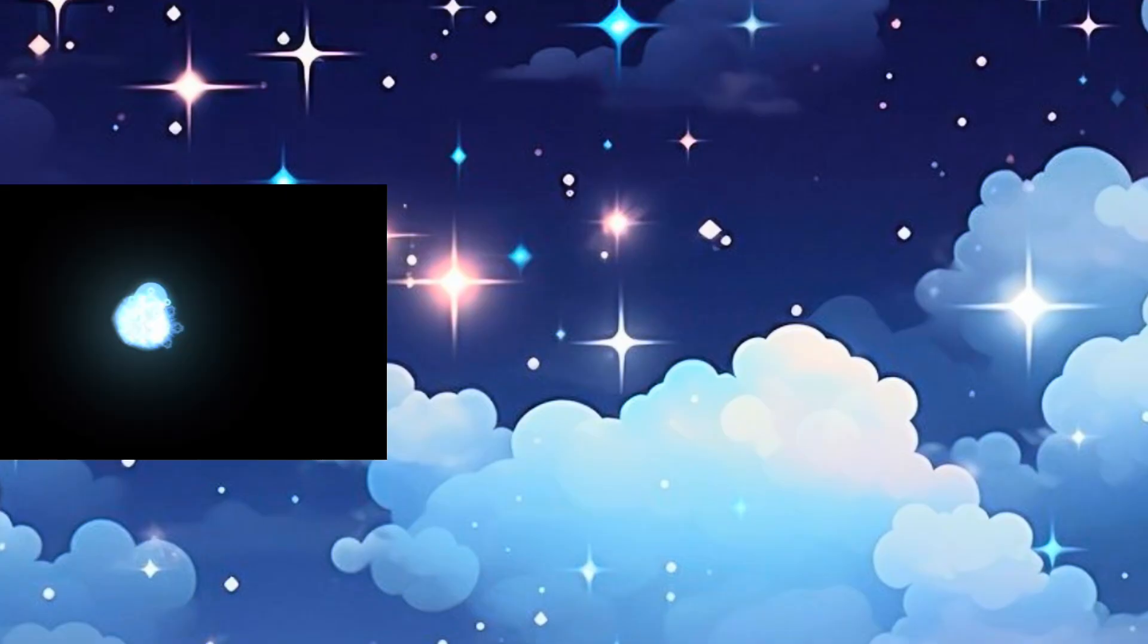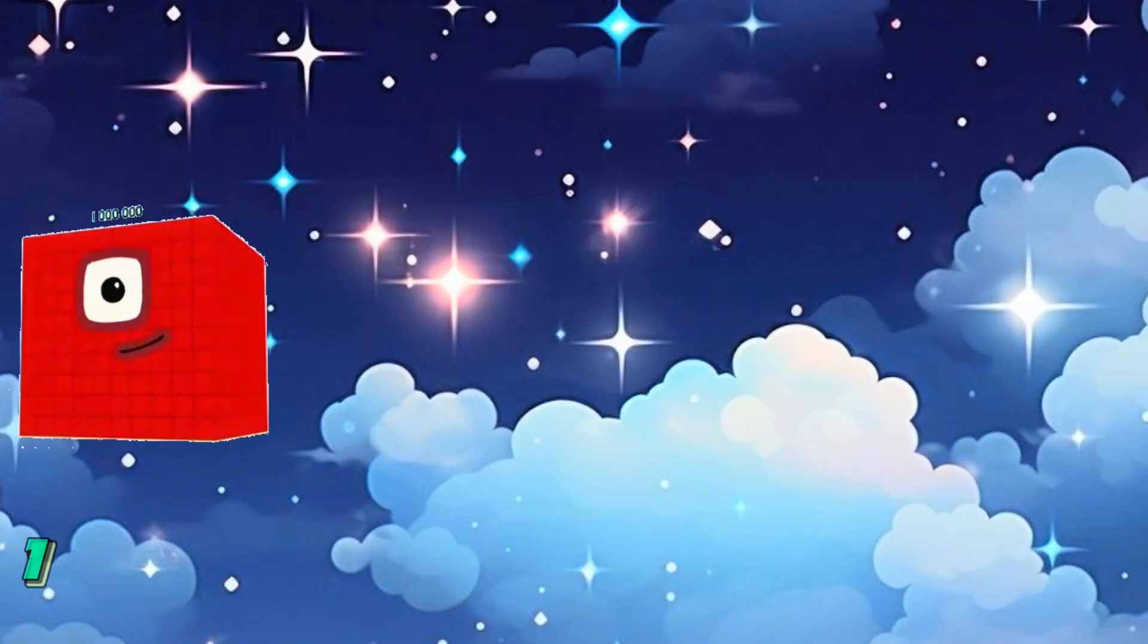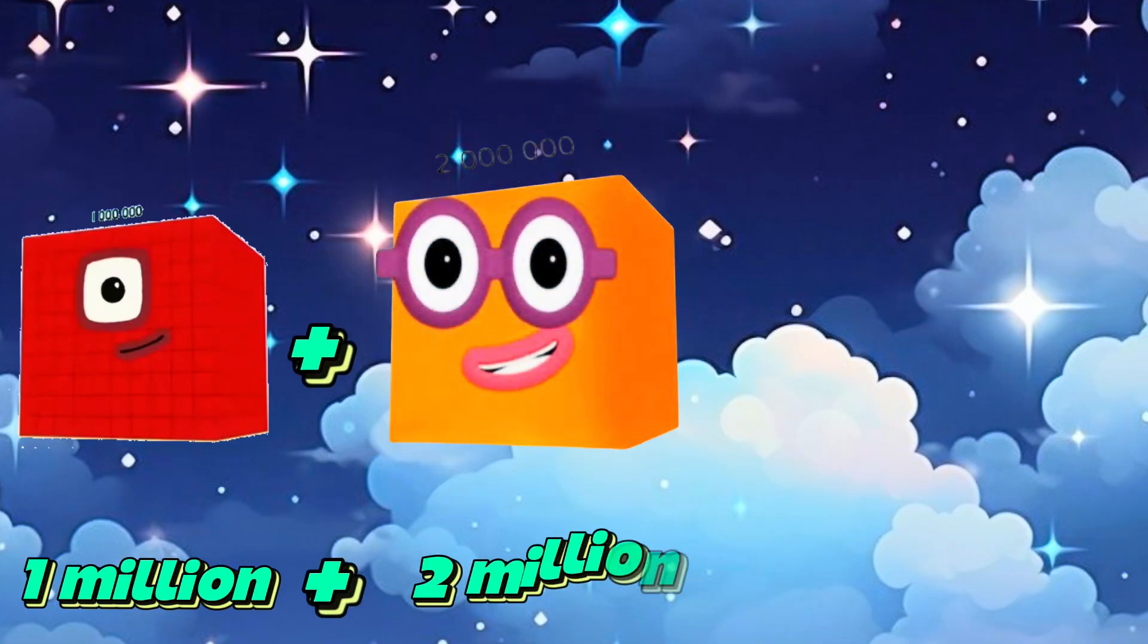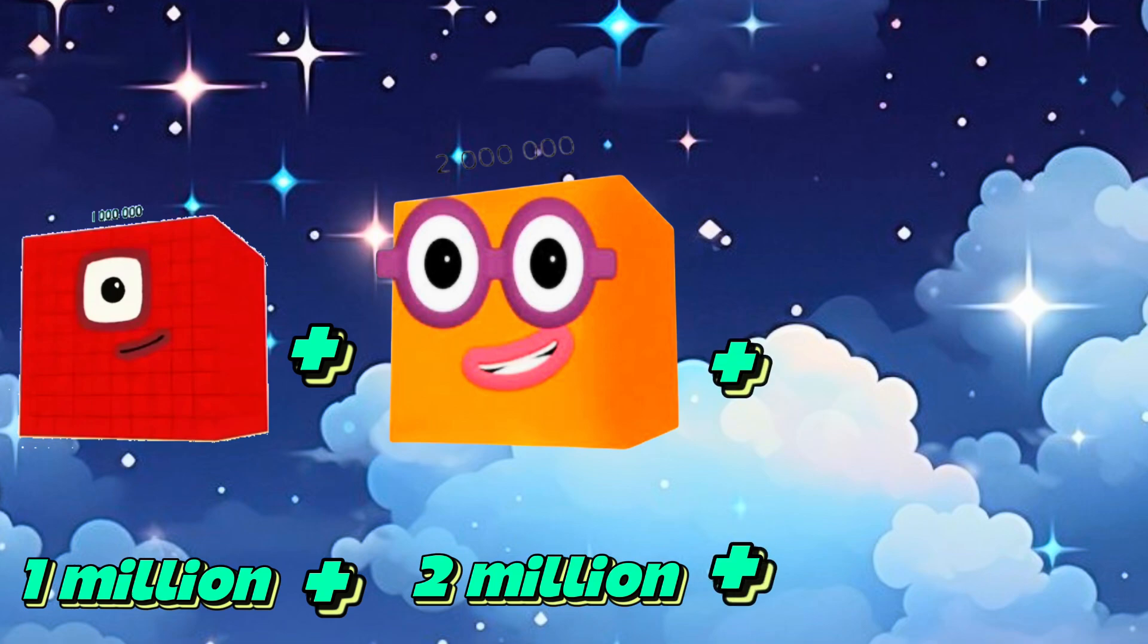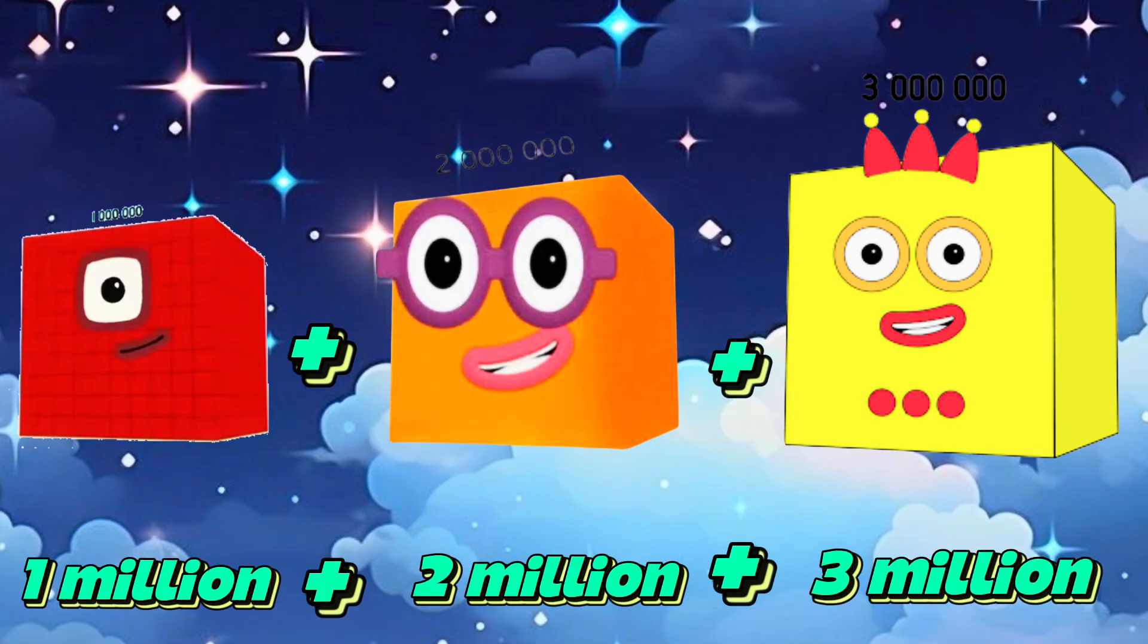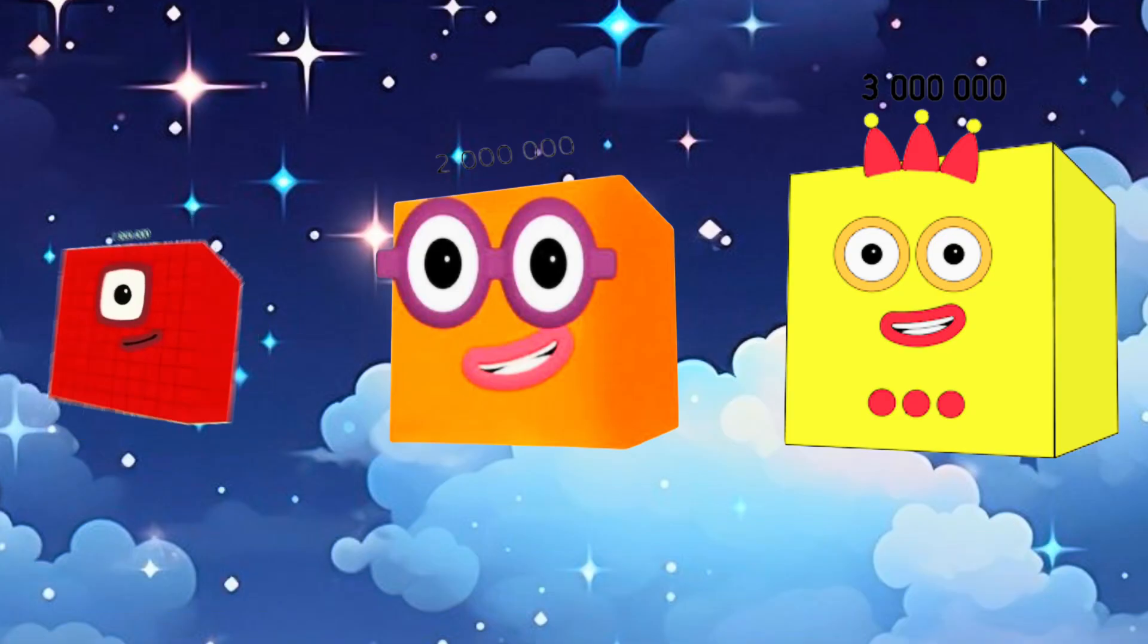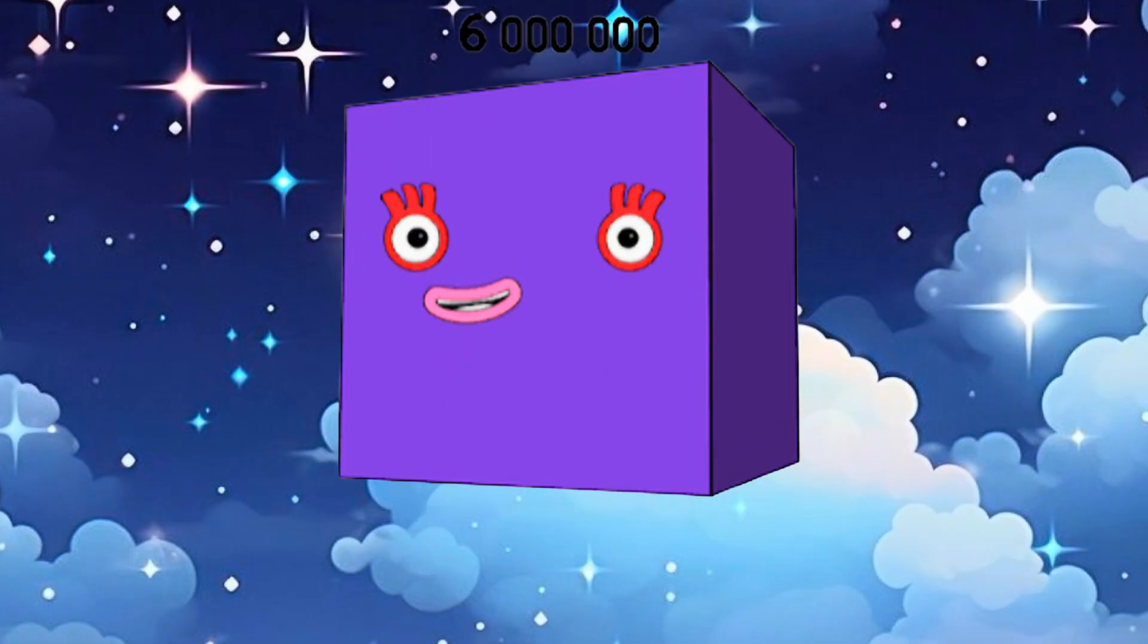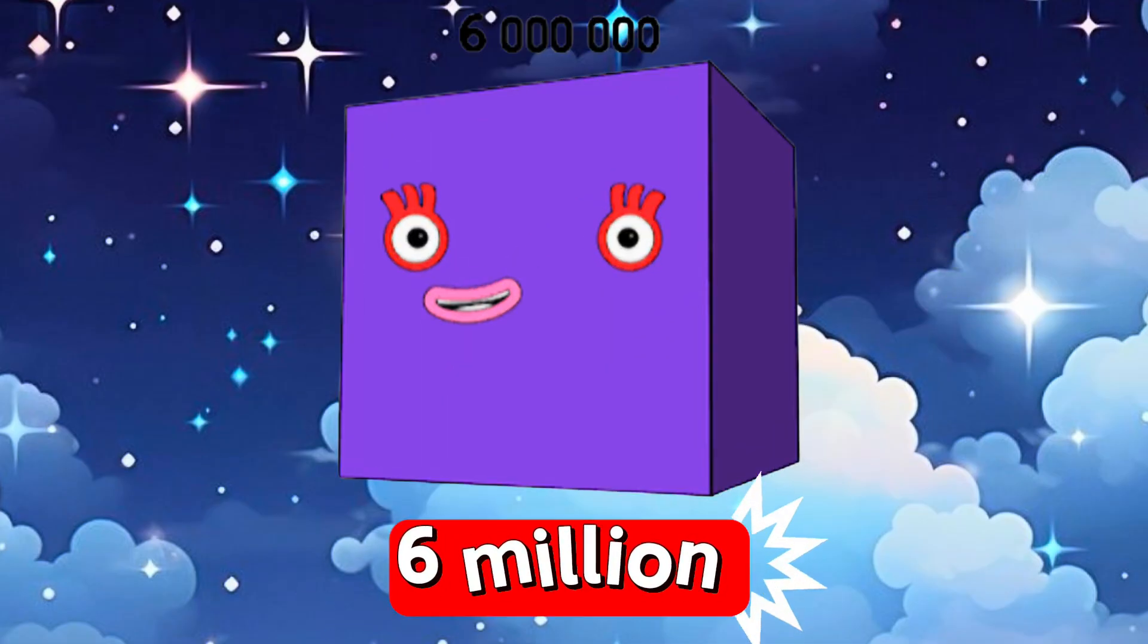And lastly, 1,000,000 plus 2,000,000 plus 3,000,000 equals 6,000,000.